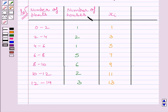Now we know number of houses represent the frequency, so we will denote it by FI. Let us now find out the product FI XI. Here, 1 multiplied by 1 is equal to 1, 2 multiplied by 3 is equal to 6, 1 multiplied by 5 is equal to 5, 5 multiplied by 7 is equal to 35. Similarly, 6 multiplied by 9 is equal to 54, 2 multiplied by 11 is equal to 22, and 3 multiplied by 13 is equal to 39.